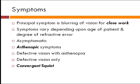Symptoms are the complaints with which a patient can present. The principal symptom is blurring of vision for close work. It may depend upon the age of the patient and the degree of refractive error — sometimes patients are asymptomatic. Asthenopic symptoms mean the patient may present with headache; they may not complain of decreased vision but whenever they start doing near work they feel headache or discomfort. In children under 15 years of age, if they are using excessive accommodation, it may lead to a convergent squint.